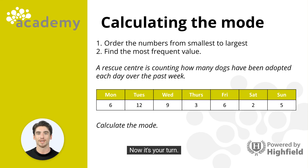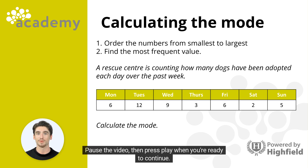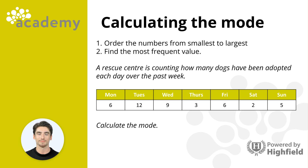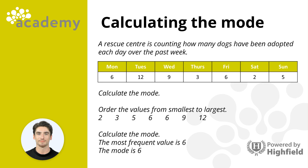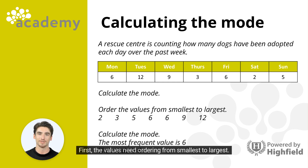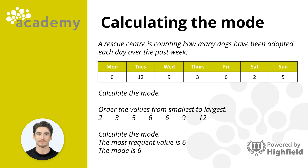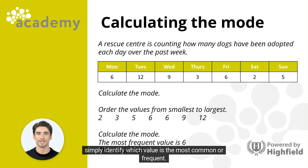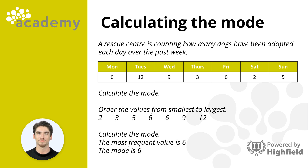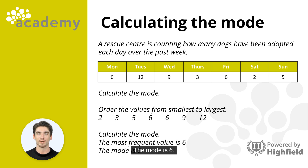Now it's your turn. Calculate the mode. First, order the values from smallest to largest. Then identify which value is the most common. The most frequent value is 6. The mode is 6.